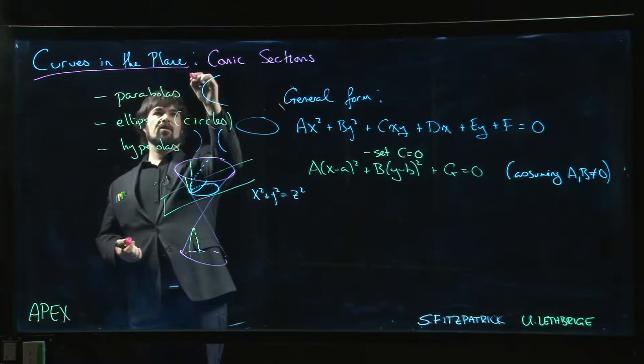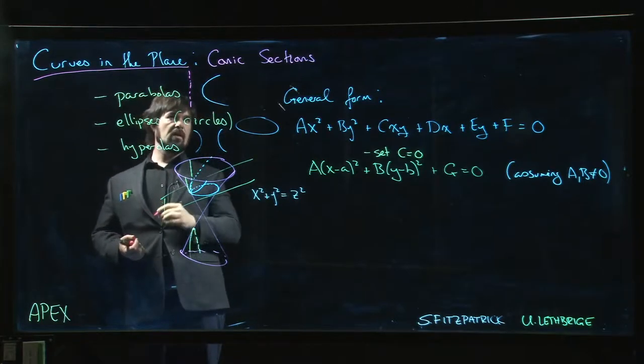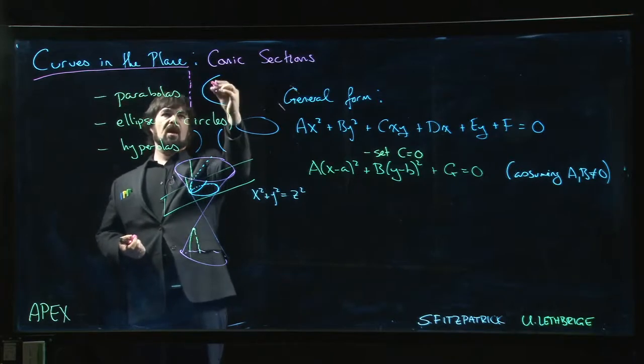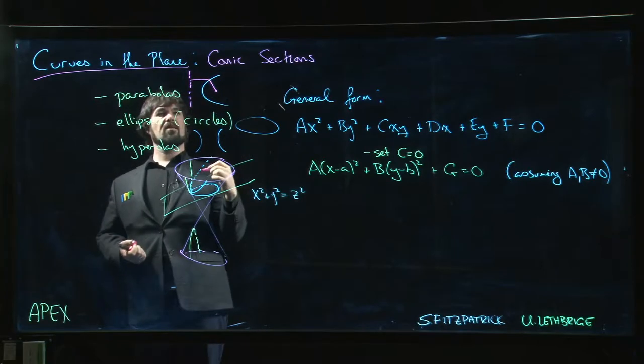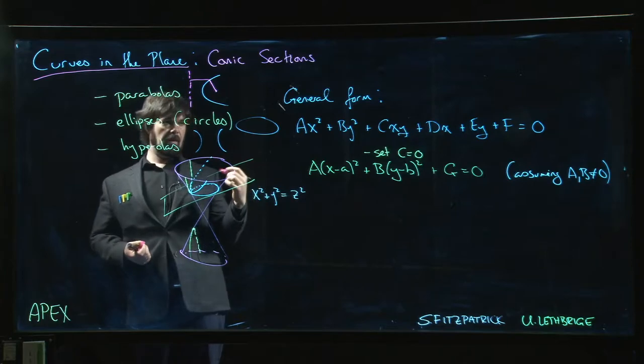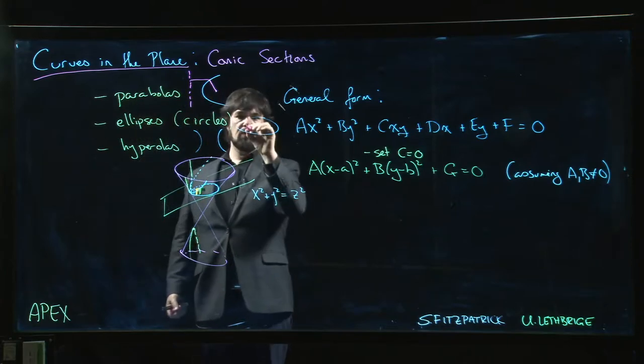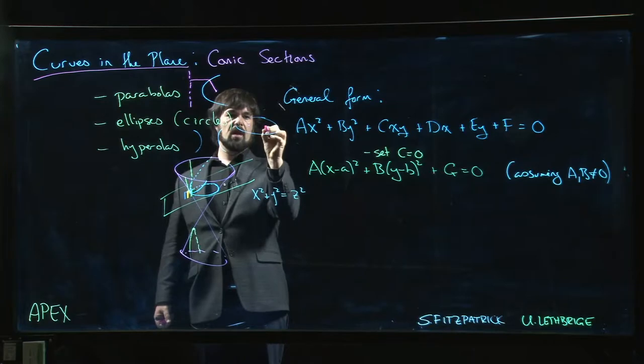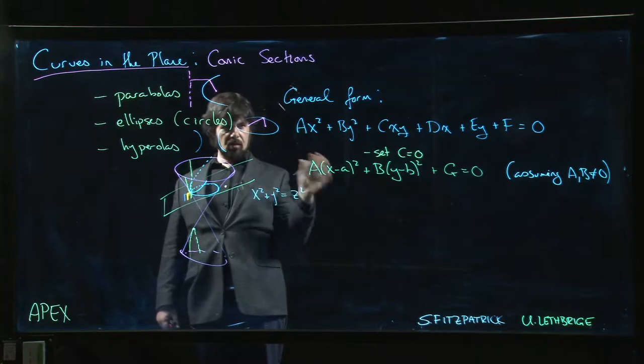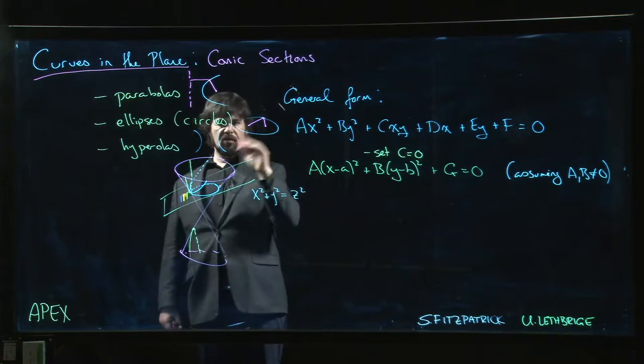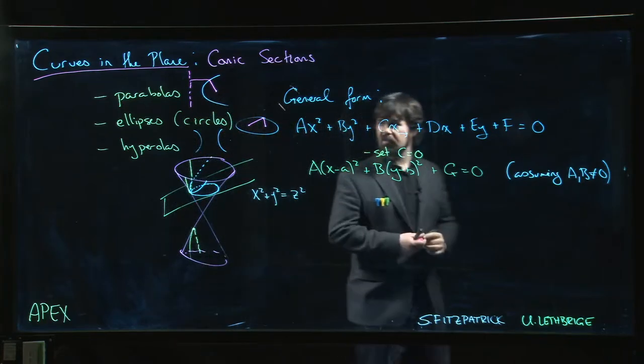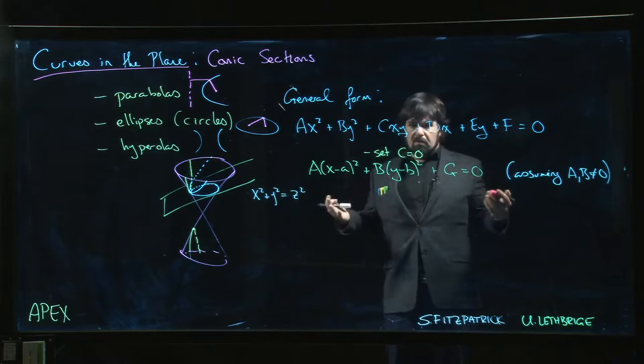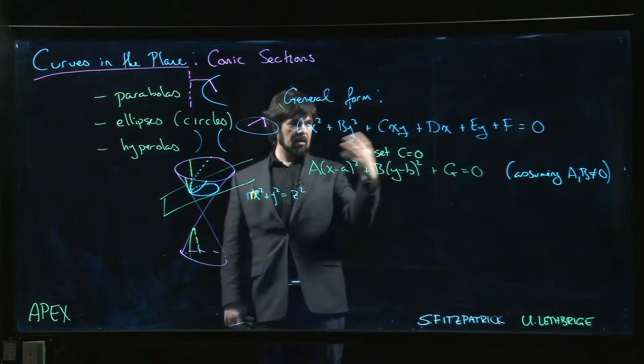It turns out that a parabola - the defining property for a parabola is that there's a line called the directrix and there's a point called a focus, and every point on the parabola is an equal distance from that line and from the focus. An ellipse has a pair of foci, and for any point on the ellipse the sum of those two distances is constant. For a hyperbola there's a similar thing with foci and you look at the difference of distances.